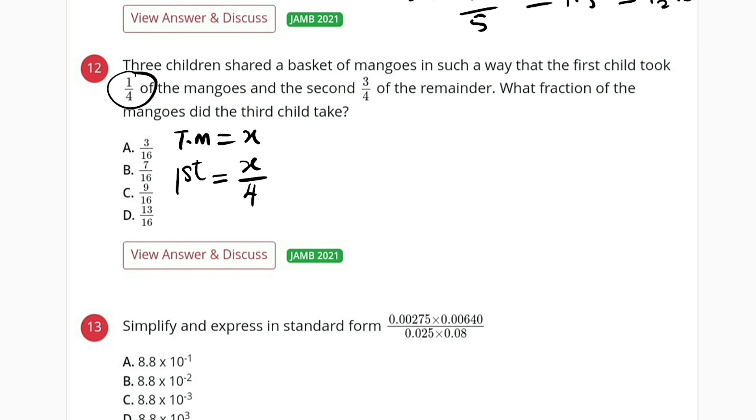So let us find out the remainder before we consider what the second child has gotten. It is going to be x, which is the total number, minus what the first child has taken, x divided by 4. And this is 4x minus x is 3x divided by 4. So this is the remainder.